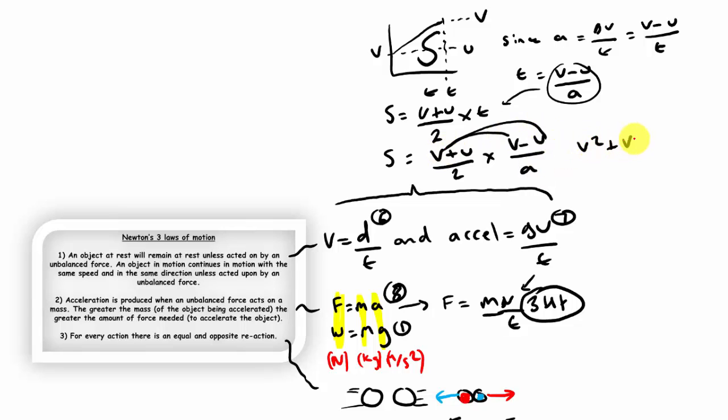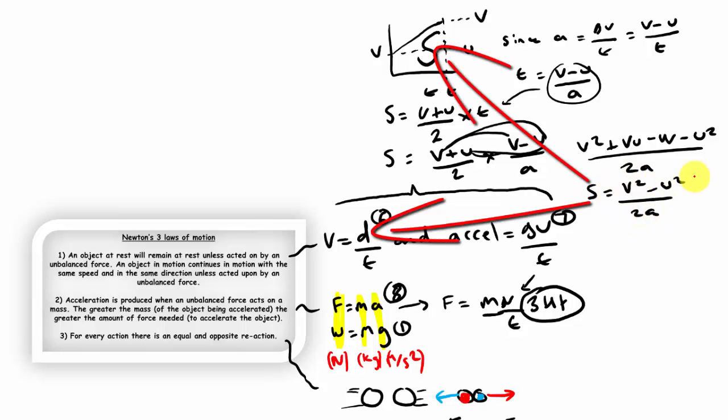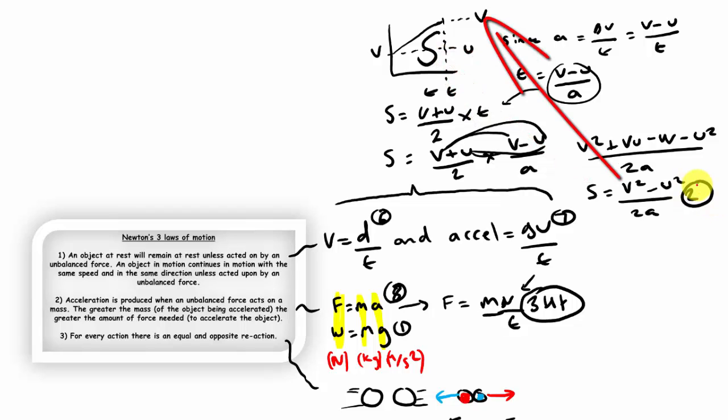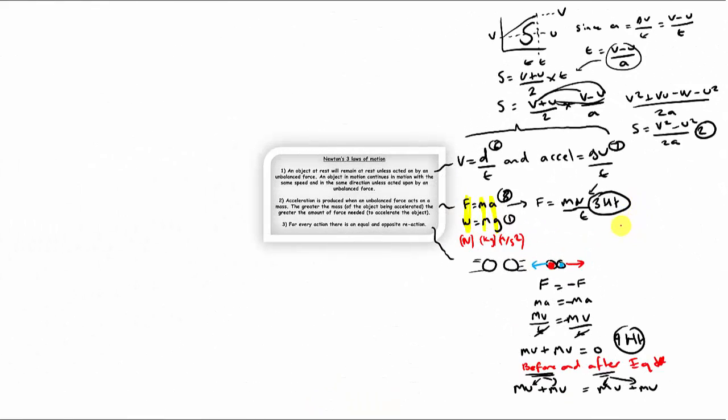Multiplying both of these fractions together gives us v squared plus vu minus uv minus u squared. Since vu and uv are the same quantity and they're subtracting from each other, they cancel out and we're left with s, which is displacement, equals v squared, which is final velocity squared minus initial velocity squared, divided by 2 times acceleration. A very useful equation often called one of the Suvat equations.